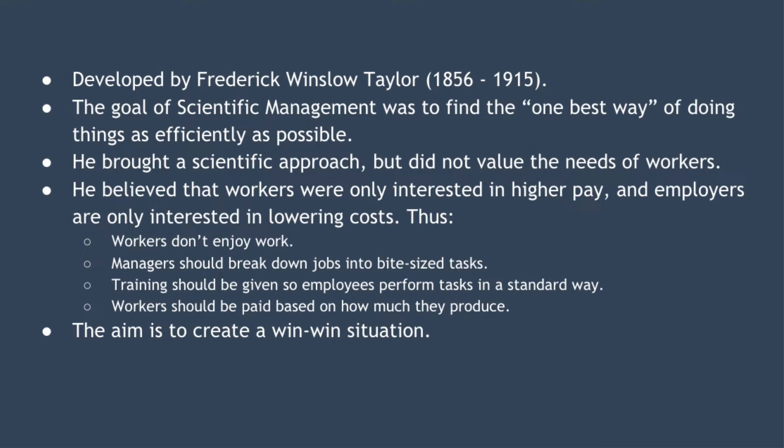He believed that workers were only interested in higher pay and employers were only interested in lowering costs and boosting profits. Because he believed that workers were only motivated by pay, he believed workers don't usually enjoy work, so they need to be monitored and controlled closely. He believed that employees had a natural tendency to take it easy and slack off whenever they could — he referred to that as natural soldiering. To help with this, he thought managers should break down each employee's job into more manageable, bite-sized tasks, training should be given so all employees perform these tasks in a standard way, and workers should be paid based on how much they produce. He called this piece rate pay.